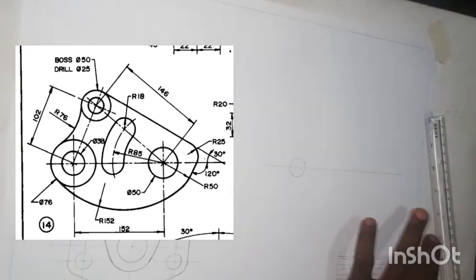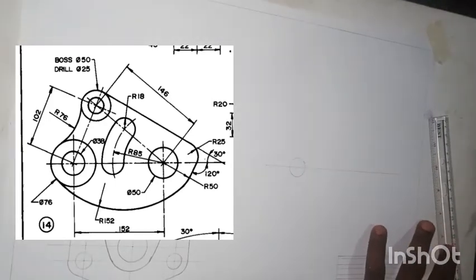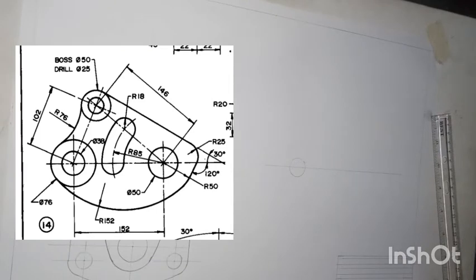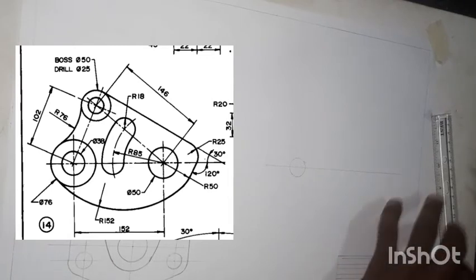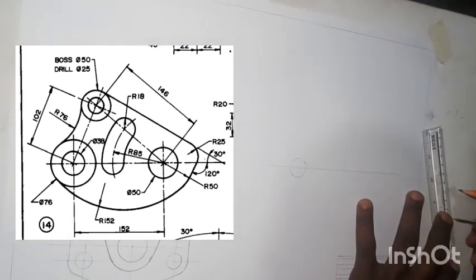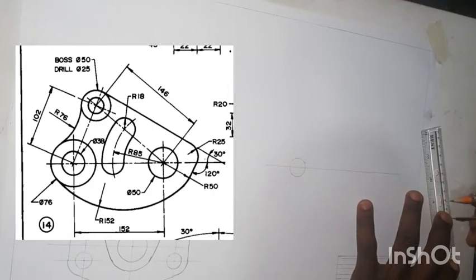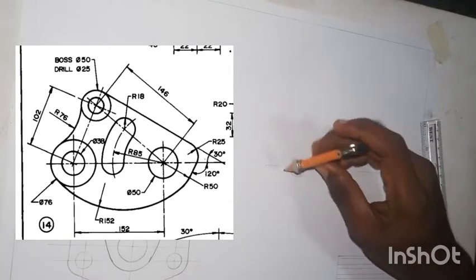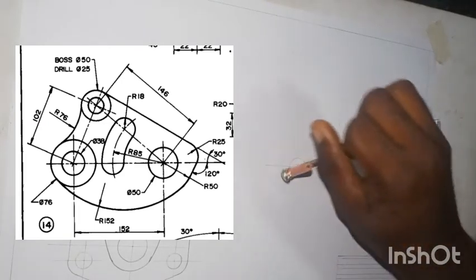Next, we will draw the bigger circle with a diameter of 76. Diameter 76 divide by 2 gives us 38, which is our radius. We then divide by 2 again to get 19. So we will be drawing another circle from the same point — I'll call it point A — with a radius of 19.